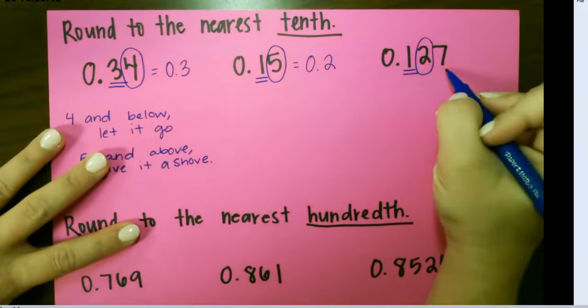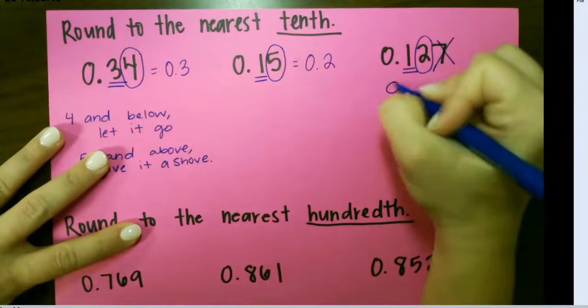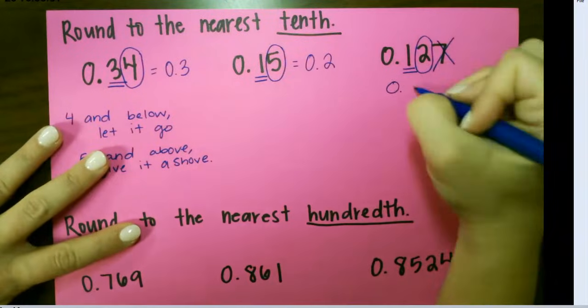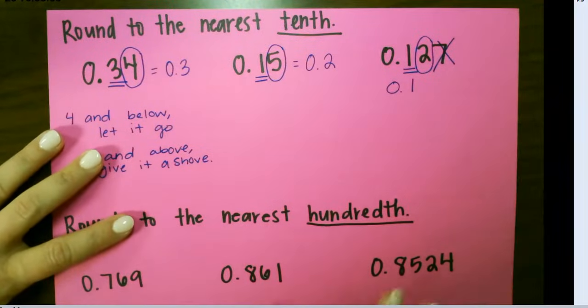For our next one, our decimal goes all the way out to the thousandths place, but we don't need this number. We only need the two. So it's four and below, so we leave it alone, and it just goes to 0.1 or 0 and 1 tenths.